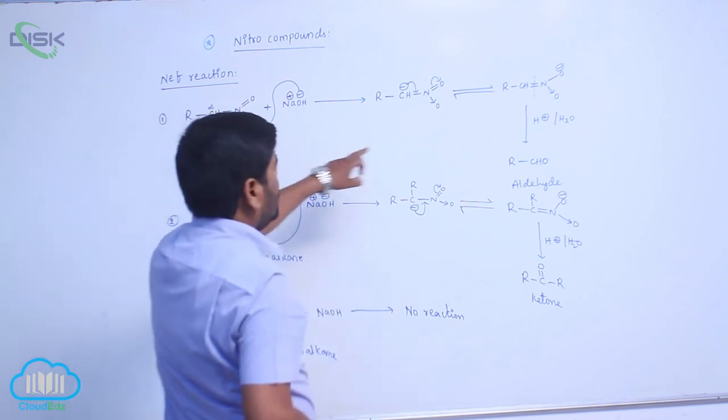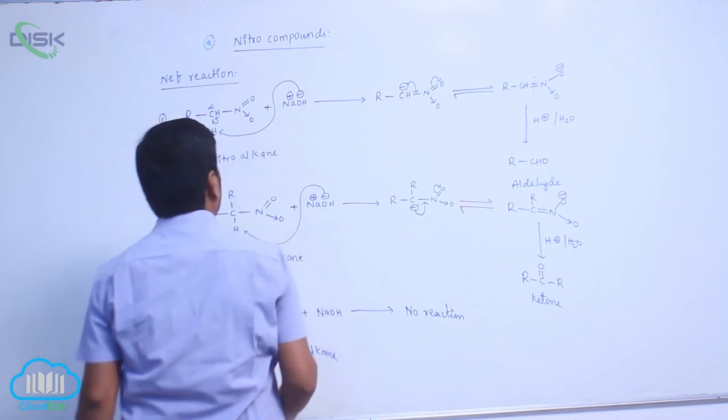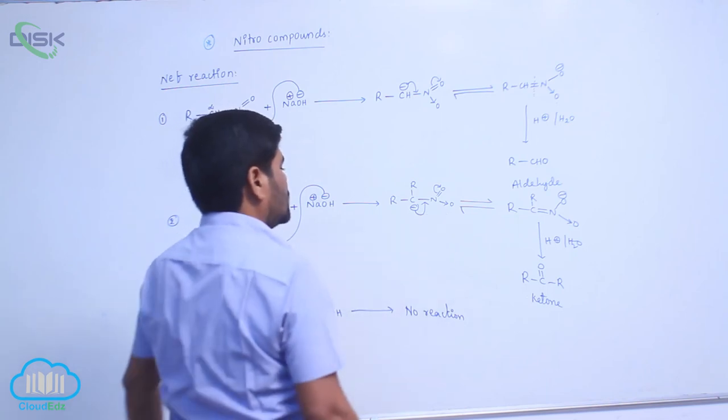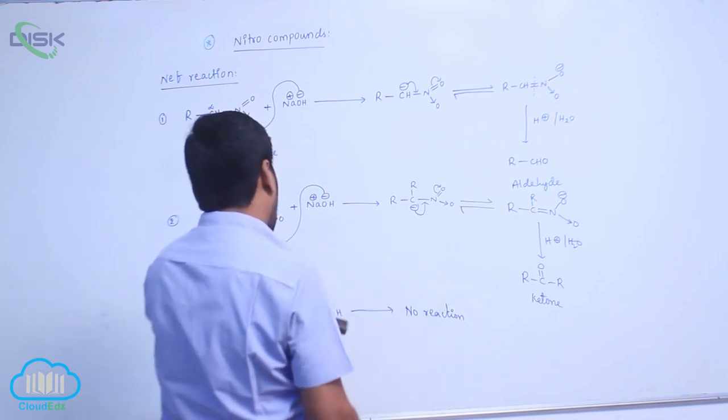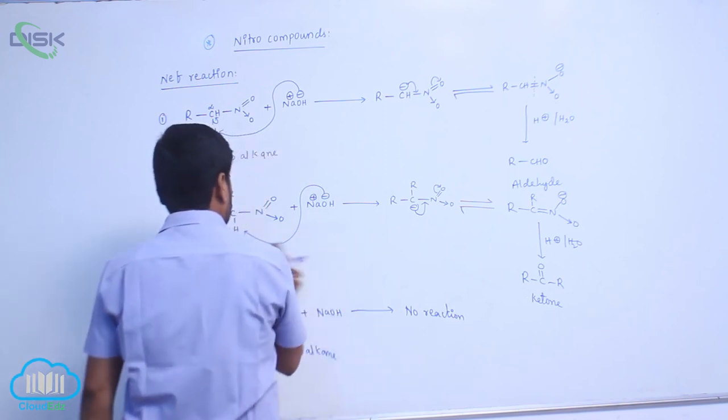So 1-nitroalkane gives aldehyde, 2-nitroalkane gives ketone, and 3-nitroalkane cannot react with base followed by acid.